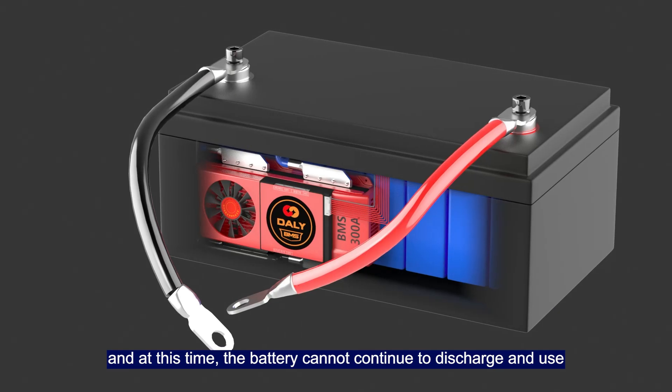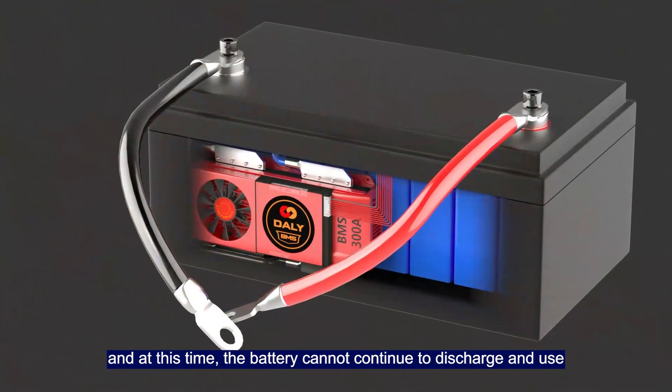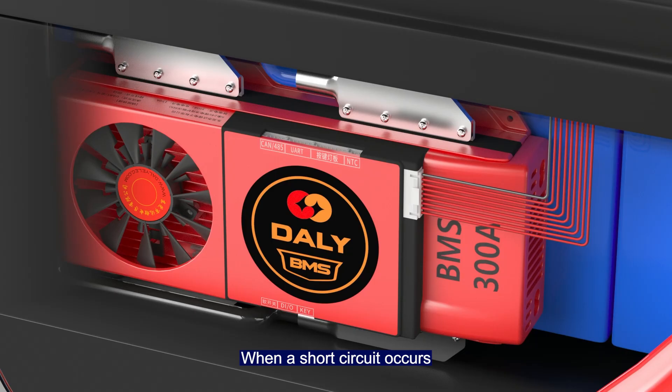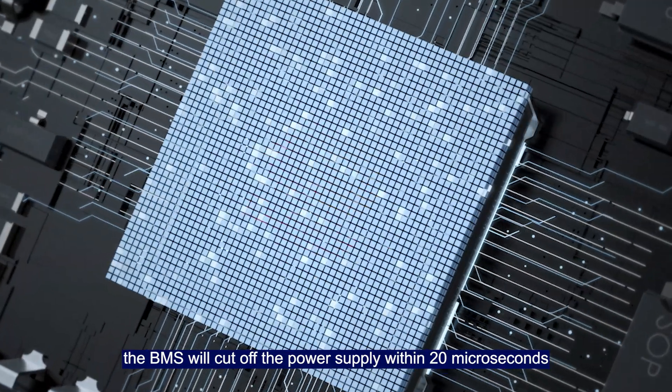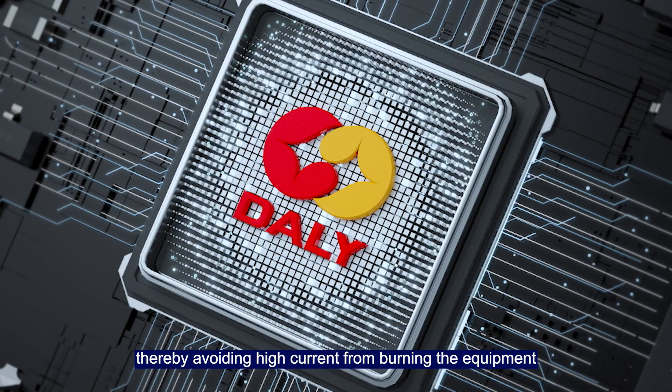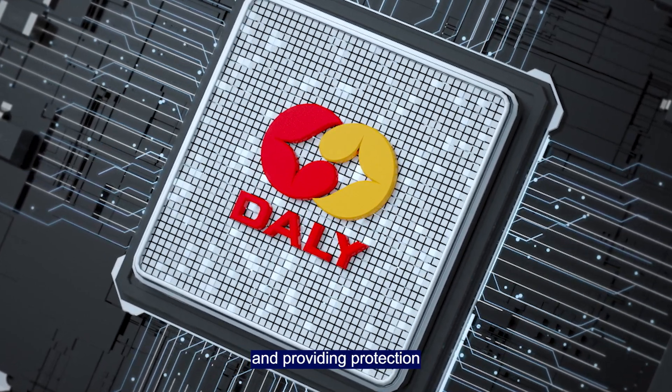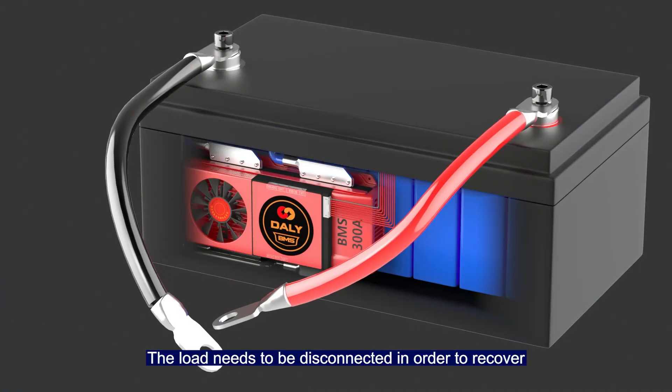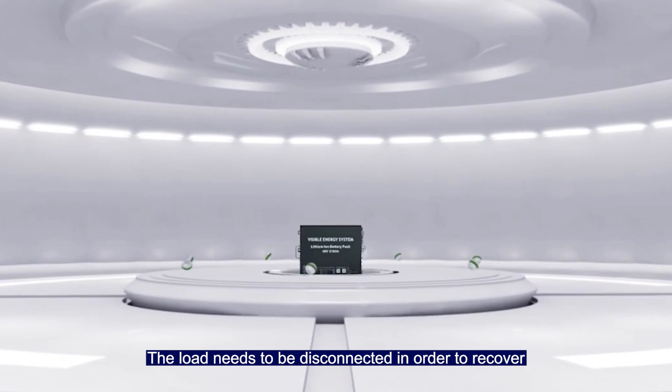In the second case, the BMS activates short circuit protection. And at this time, the battery cannot continue to discharge in use. When short circuit occurs, the BMS will cut off the power supply within 20 microseconds, thereby avoiding high current from burning equipment and providing protection.